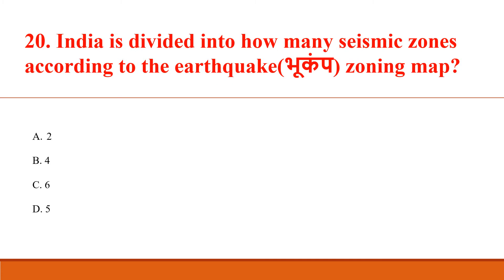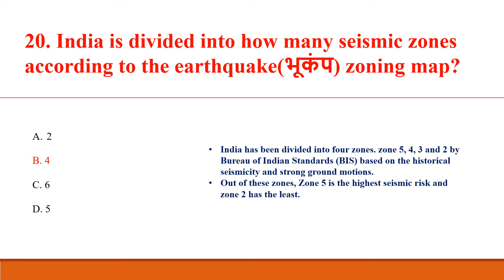India is divided into how many seismic zones according to the earthquake zoning map? Answer B: 4. India has been divided into 4 zones — zones 5, 4, 3, and 2 — by the Bureau of Indian Standards, based on historical seismic activity and strong ground motions. Zone 5 is the highest seismic risk and zone 2 has the least.